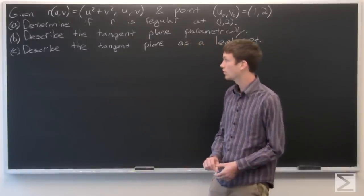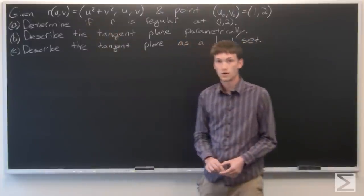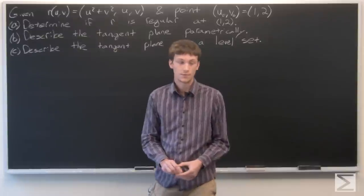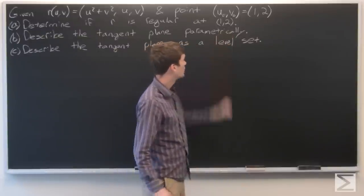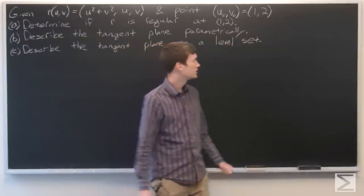Okay, in this problem we're given a function r of u, v, defined as the first component is u squared plus v squared, the second component is u, and the third is v. And we're given the point u sub not v sub not at is 1, 2.